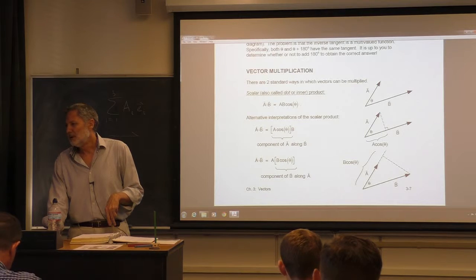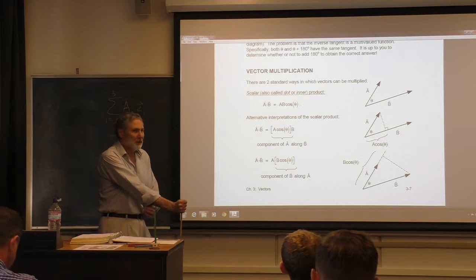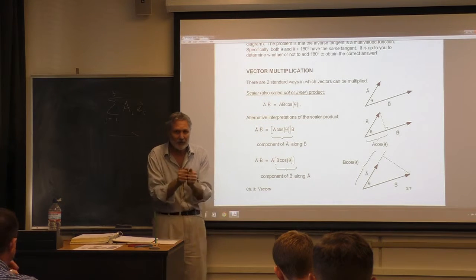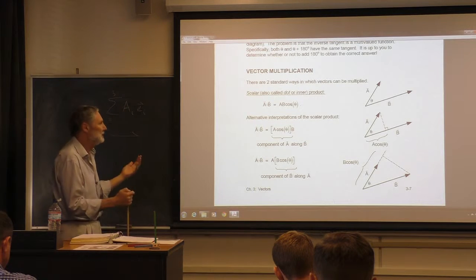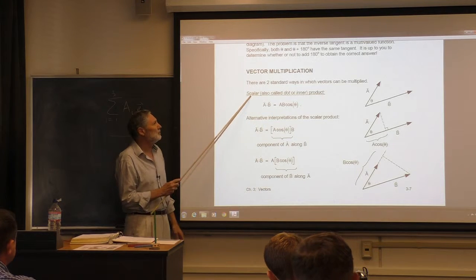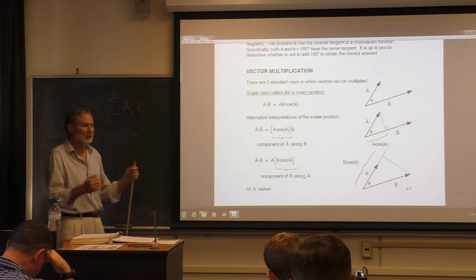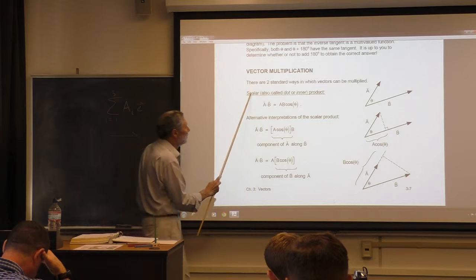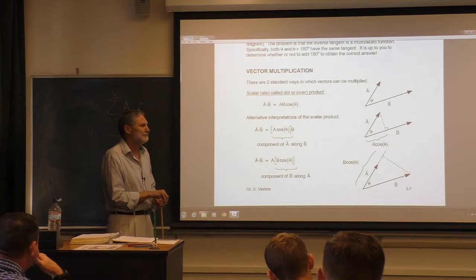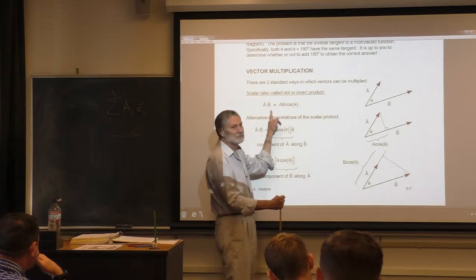We also need to multiply two vectors together. There are two standard ways. The first is called the scalar product, also called the dot product or inner product. We take two vectors and get out a scalar. By definition, it's the magnitude of the first vector times the magnitude of the second vector times the cosine of the angle between the two vectors.